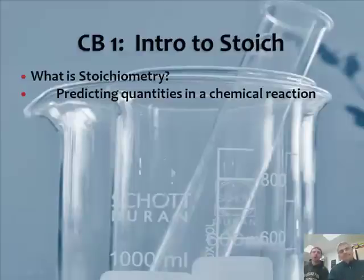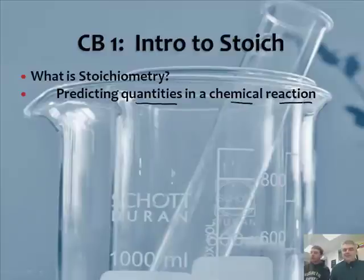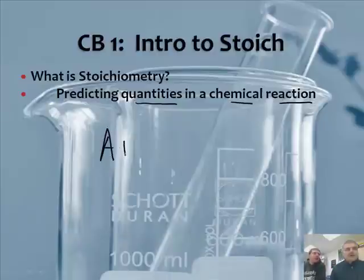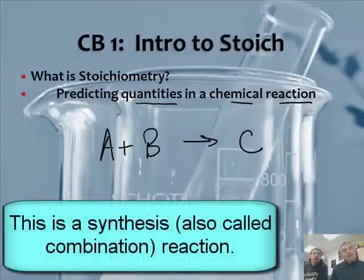What is stoichiometry? Something tells me it's predicting the quantities in a chemical reaction. Predicting quantities can show up in a number of ways — either the number of moles of something, the number of grams of something, liters of a gas, or milliliters of a solution. So if you have a reaction like A plus B makes C, that would be a synthesis or combination reaction.